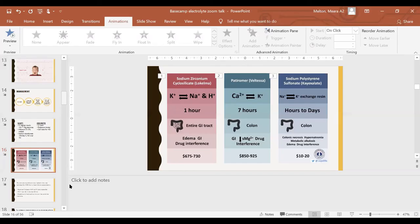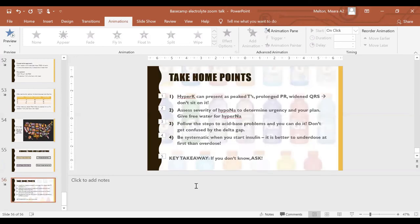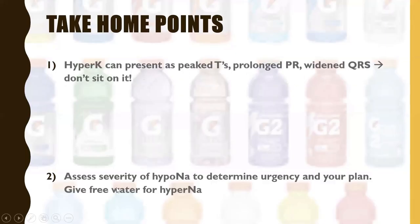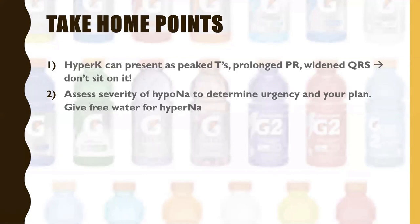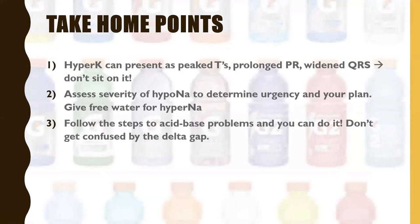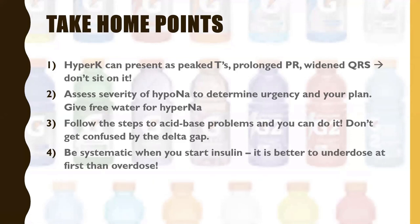Take-home points: hyperkalemia can present as peaked T waves, prolonged PR, and widened QRS — don't sit on it. Assess the severity of hyponatremia to determine urgency and plan; give free water for hypernatremia. Follow the five steps for acid-base problems and you can do it — try not to get confused by the delta gap, but it takes practice. We didn't get to the insulin section, but if you have questions or want to review it later, let us know.